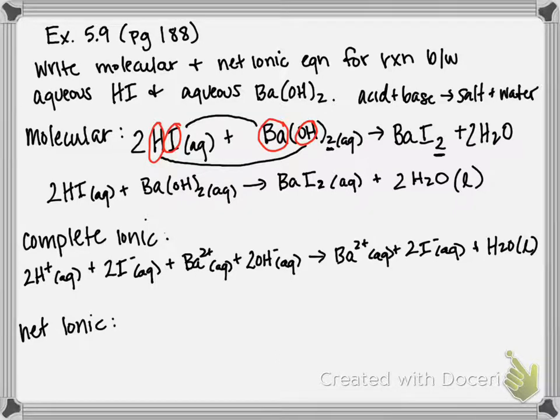So now to do our net ionic evaluation, we look and see which of these are our spectator ions. We have 2I- on both sides, so that's going to get crossed out. We have Ba2+ on both sides, that's going to get crossed out. And that leaves us with 2H+, 2OH-, and H2O. Which means this acid-base neutralization reaction just produces water. And in the case between a strong acid and strong base, you should always cancel everything out and just be left ultimately with water.